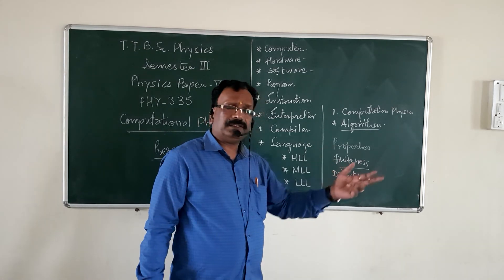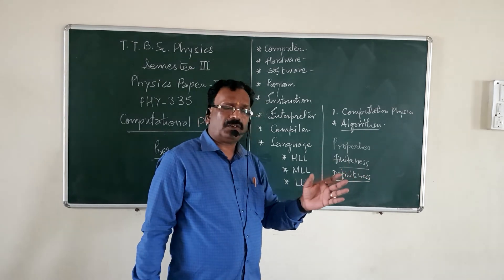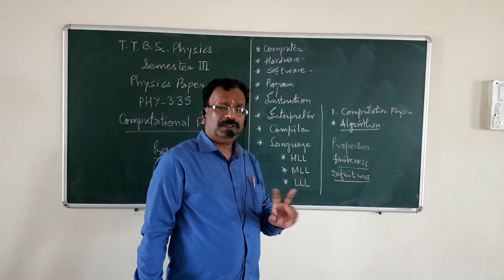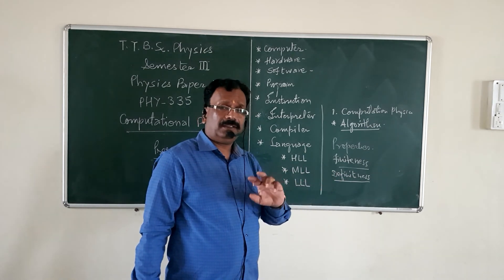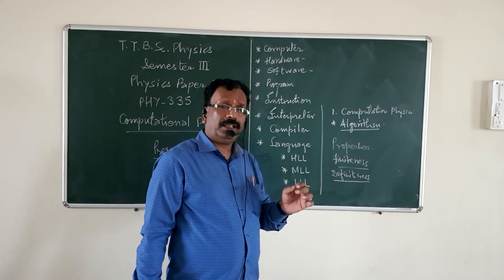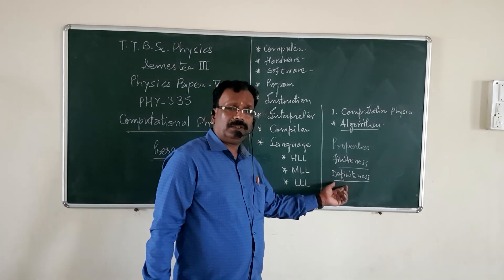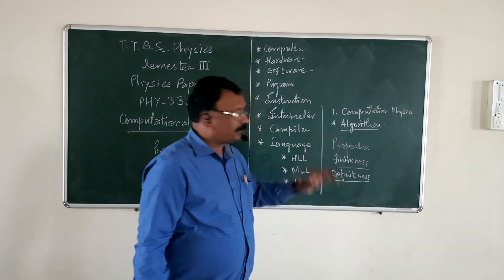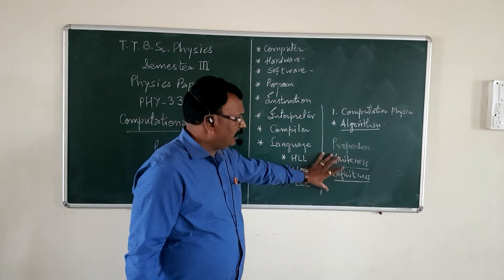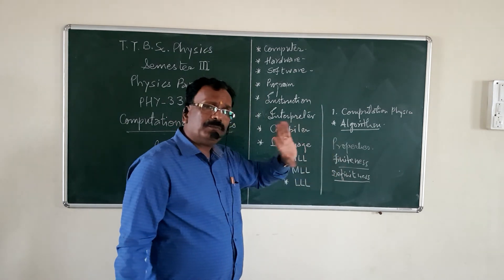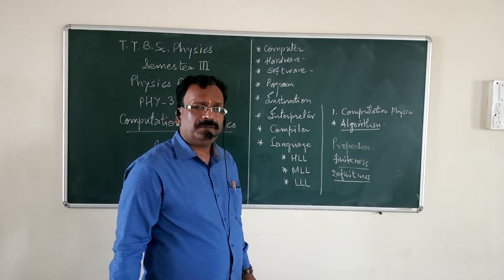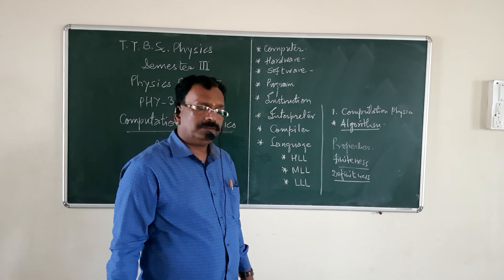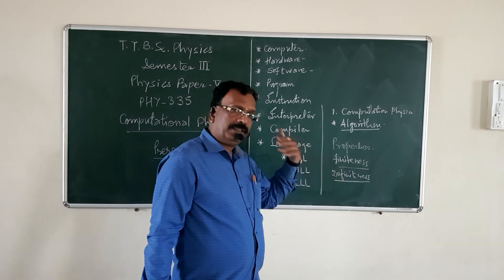If it said 'twice or thrice in a week' there would be ambiguity. There should be no ambiguity — that is the property of definiteness. There are more properties of algorithm which will be explained later.